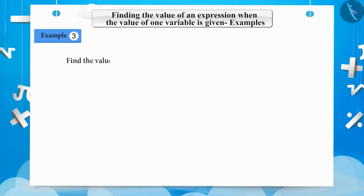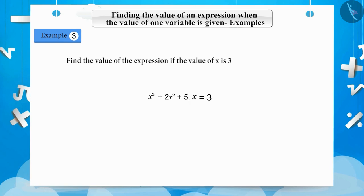Example 3: In the given expression, the value of x is 3. Find the value of the expression x cubed plus 2x squared plus 5. Substituting x equal to 3 in the expression, we get 3 cubed plus 2 multiplied by 3 squared plus 5.